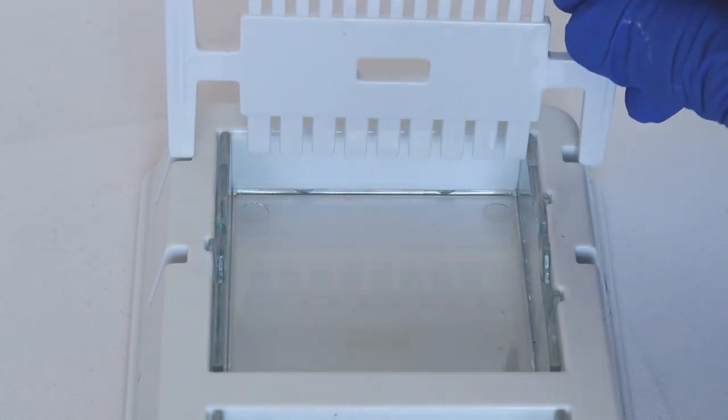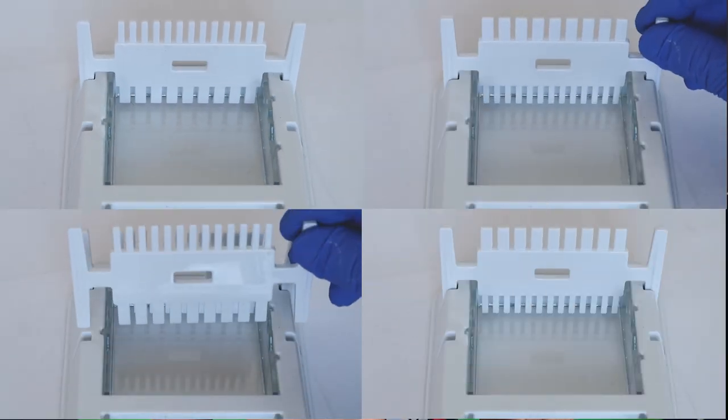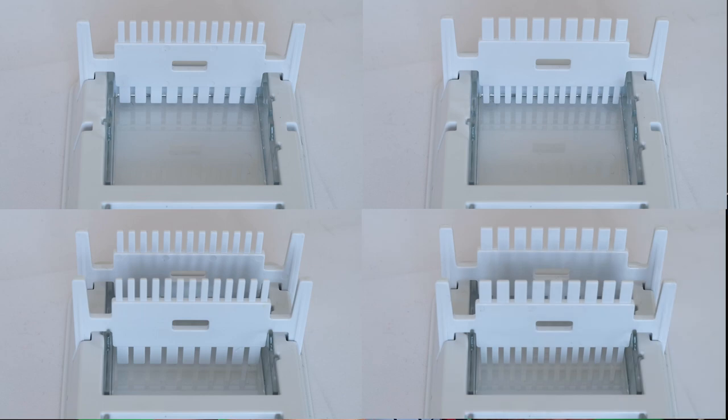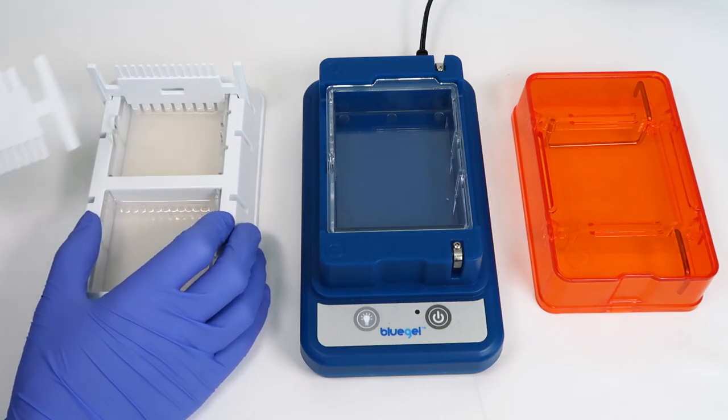The two-sided combs give you the ability to create gels with 9, 13, 18, or 26 lanes, and the small gels will set after just 10 minutes.